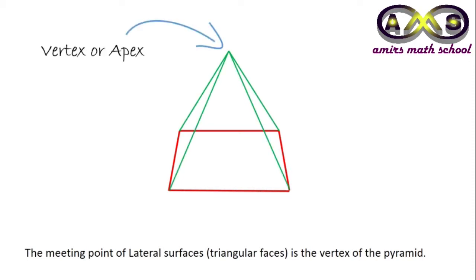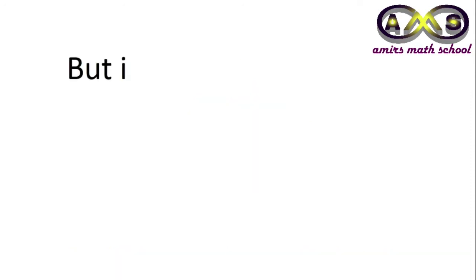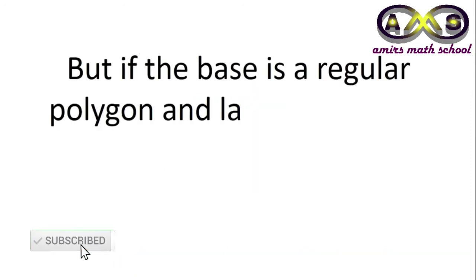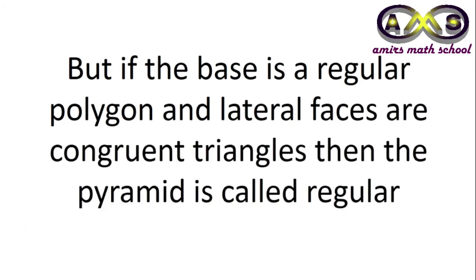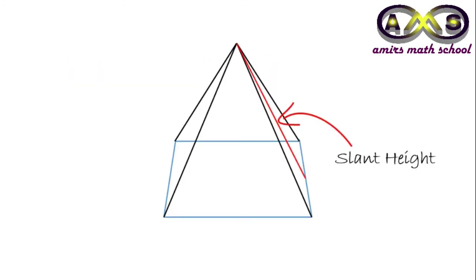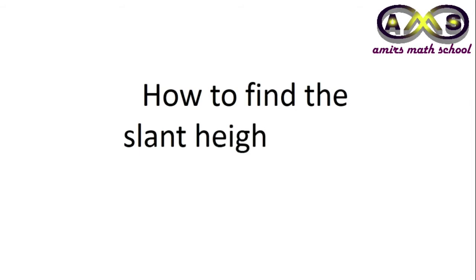This point is the vertex, or you can call it the apex, and these triangular faces are the lateral surfaces of the pyramid. If the base is a regular polygon and the lateral faces are congruent triangles, then the pyramid is called a regular pyramid. For this pyramid, this red line is the slant height, this green line represents the height, and this black line represents the edge — the line joining from the vertex to the corner of the base.